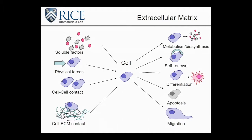The extracellular matrix has a large effect on cells — you can easily impact cell fate simply by the constitution of the extracellular matrix you add cells to. Things like soluble factors, physical forces, cell-to-cell contact, and cell-to-ECM contact can all affect cell fate in a number of ways: from metabolism, where we can guide cells to produce their own set of growth factors, to self-renewal, where we can preserve a stem cell's self-renewal population, as well as differentiation. The extracellular matrix can also guide cells into an apoptotic pathway, or physically guide cells through migration.